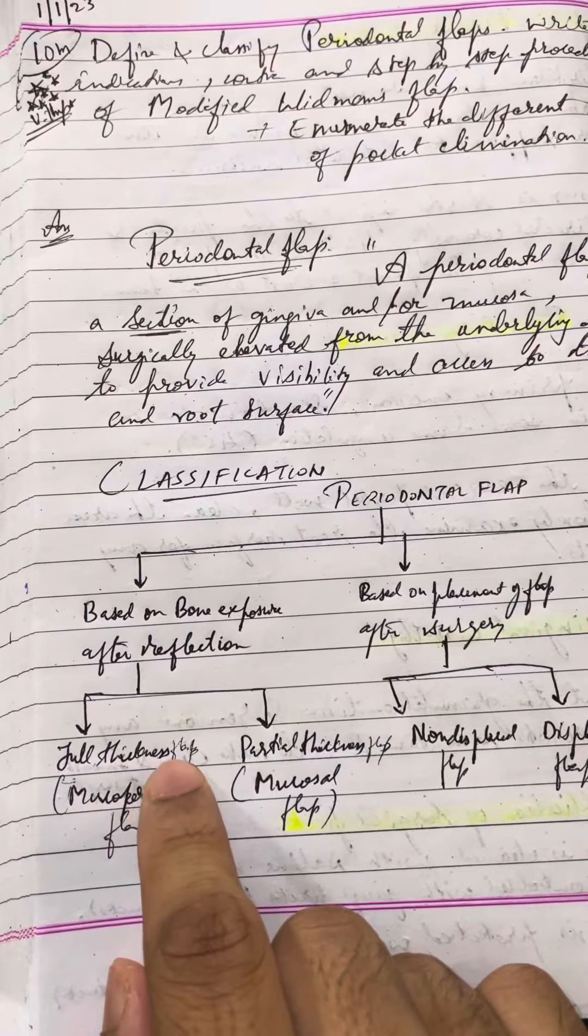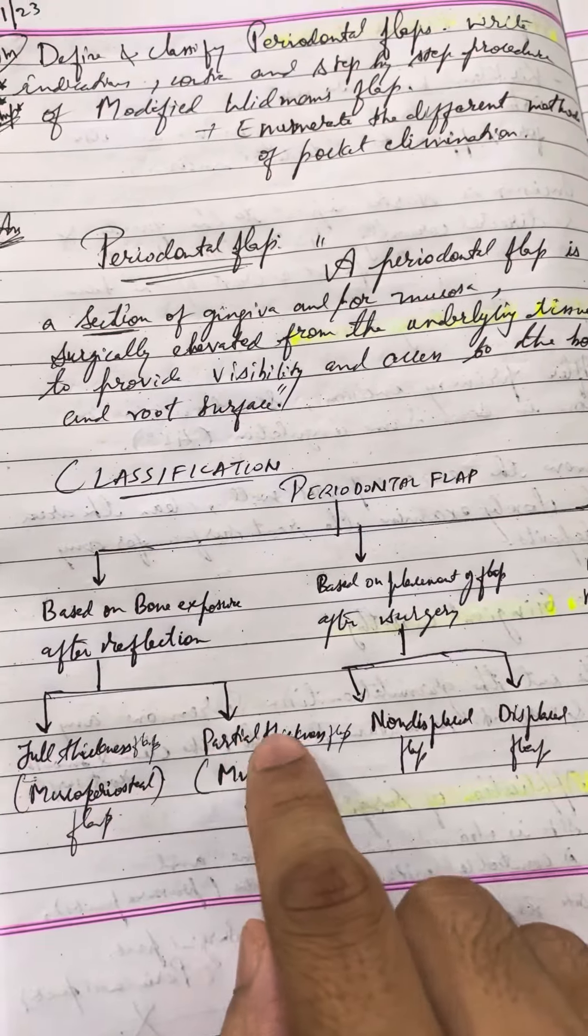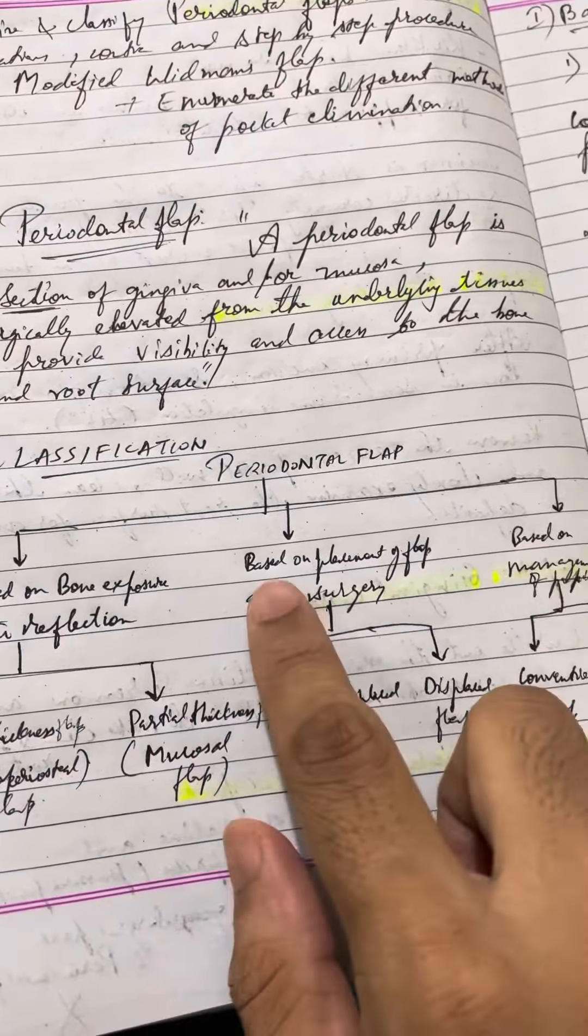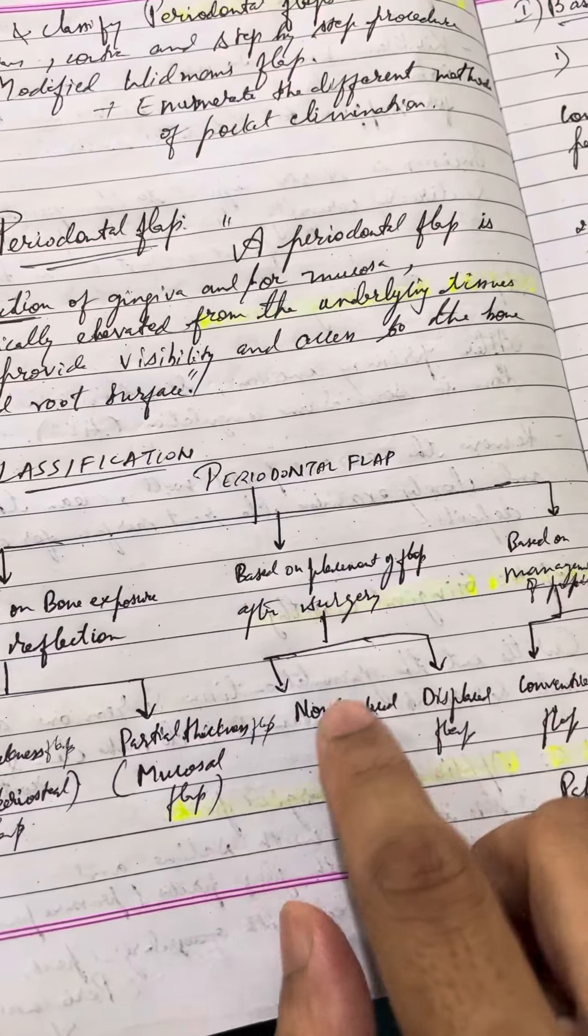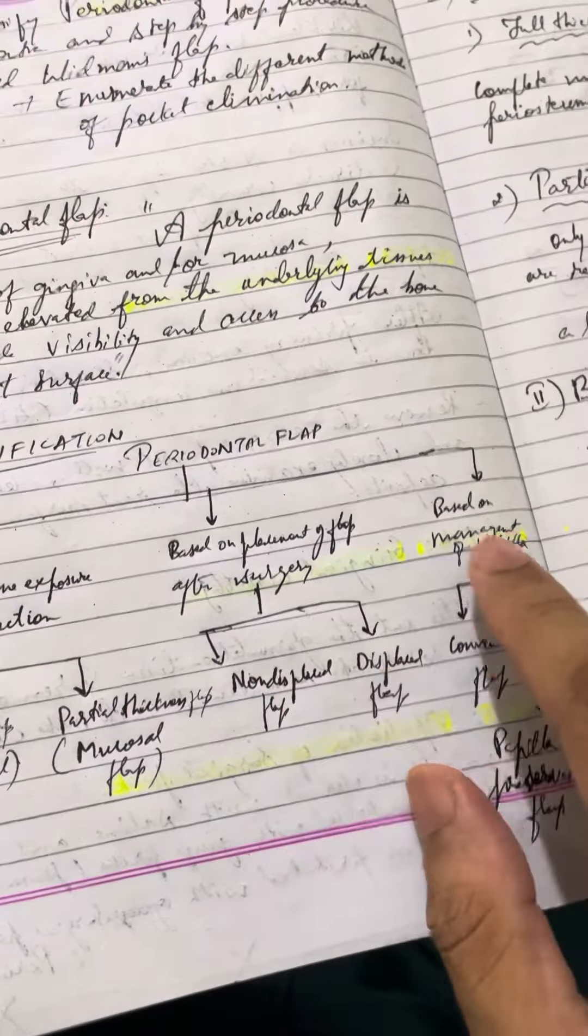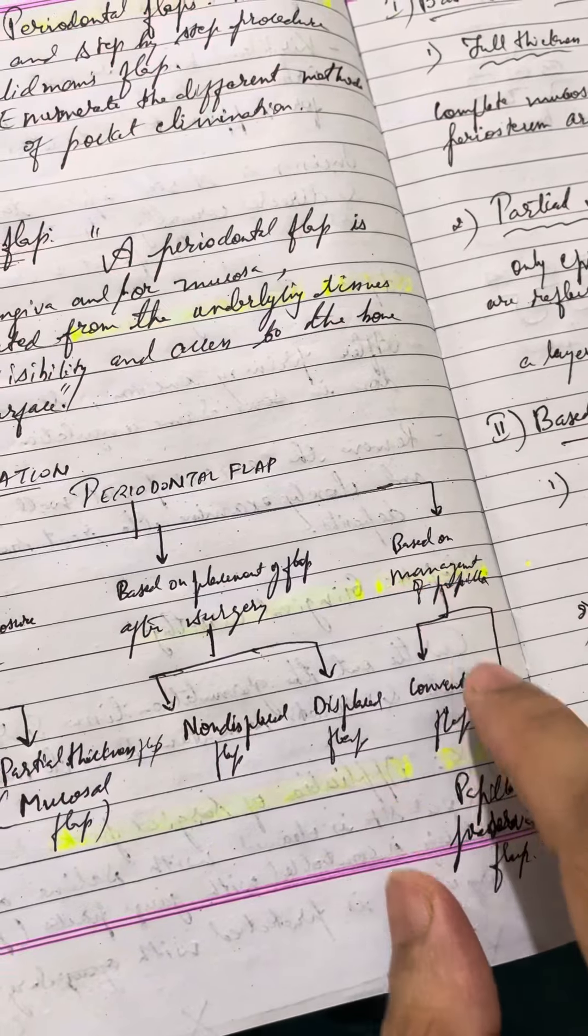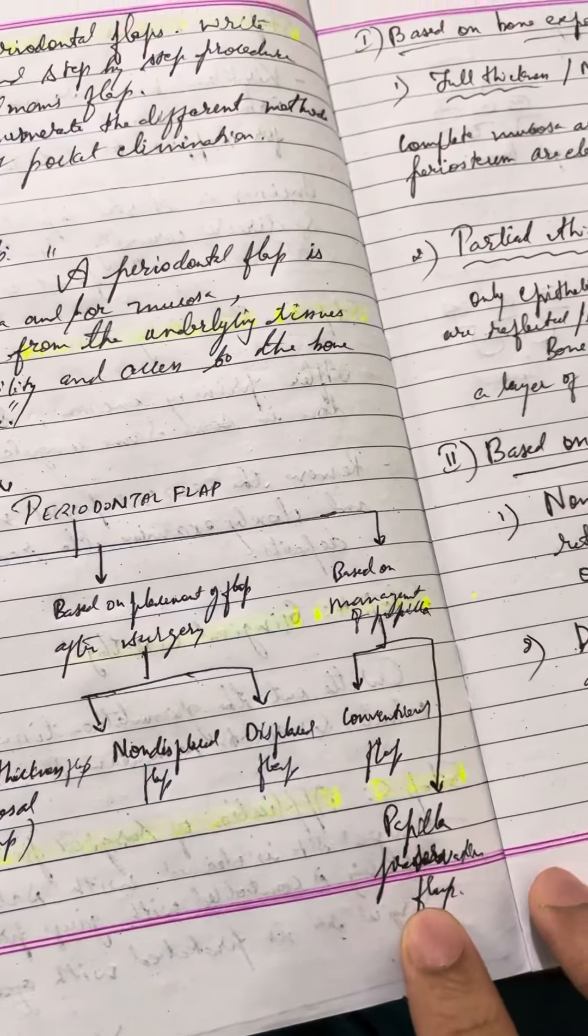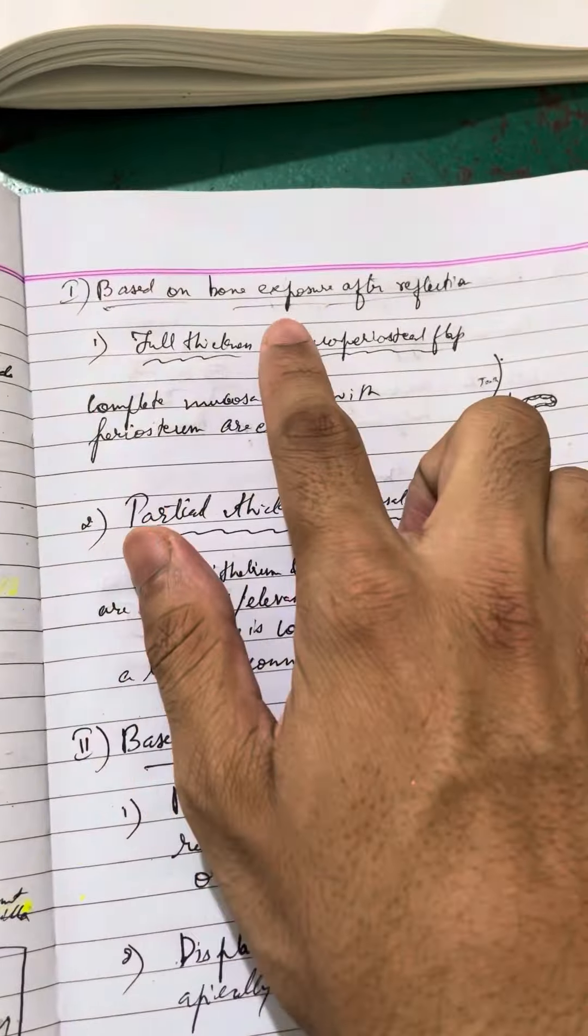Full thickness flap or mucoperiosteal flap, partial thickness flap or mucosal flap. Based on placement of flap after surgery: non-displaced flap, displaced flap. Based on management of papilla: conventional flap, papilla preservation flap.